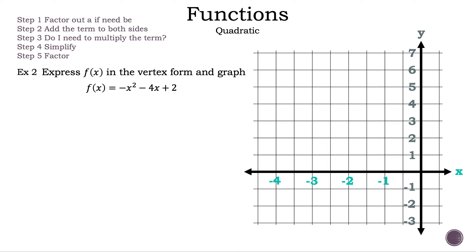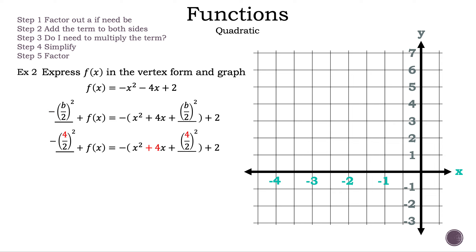Now let's read the question. Express f of x, where f of x is equal to negative x squared minus 4x plus 2, in the vertex form and graph. Now let's convert this quadratic function into vertex form using complete the square. In this case, a is negative 1. So we need to factor out the negative 1 from the first two terms to make the coefficient in front of x squared equal to 1. The next step is to add b over 2 squared to both sides. In this case, b is 4, because we use the numbers inside the parentheses.